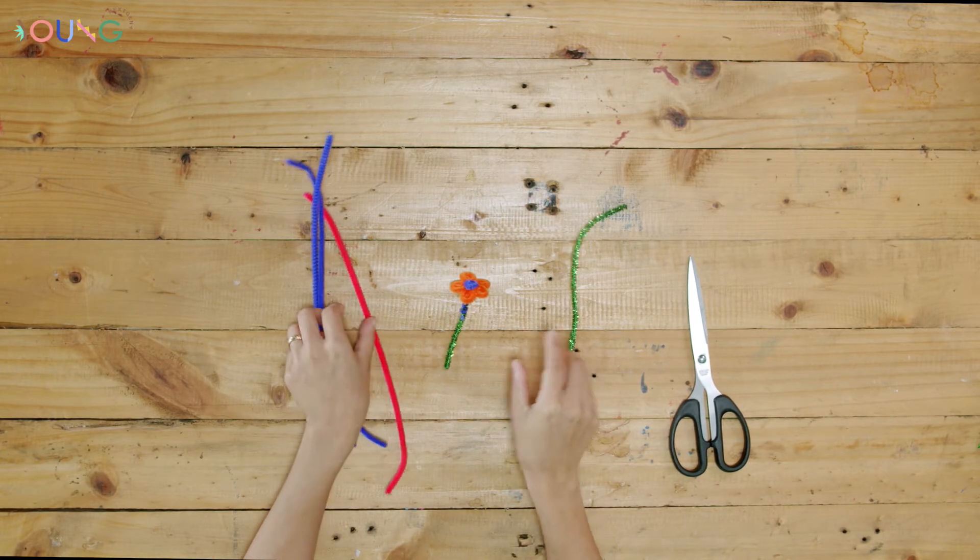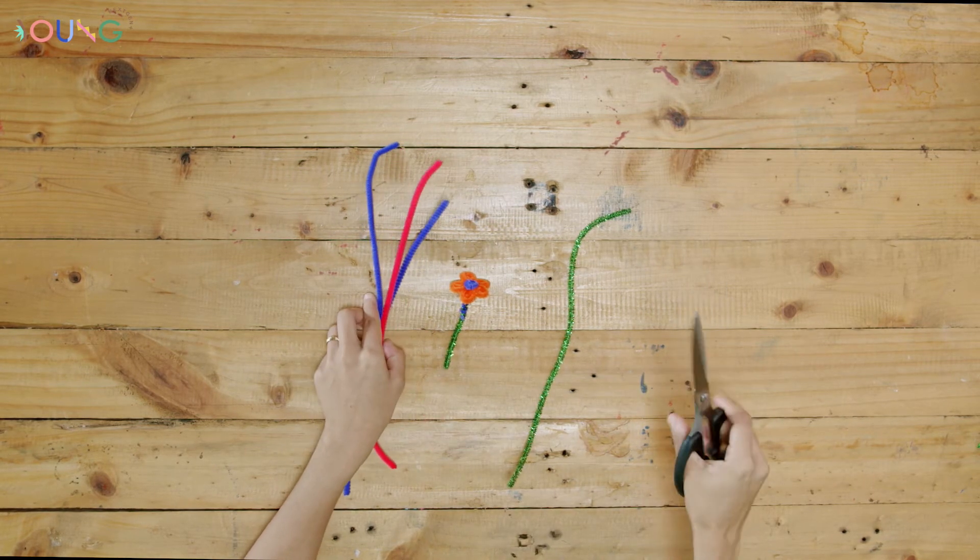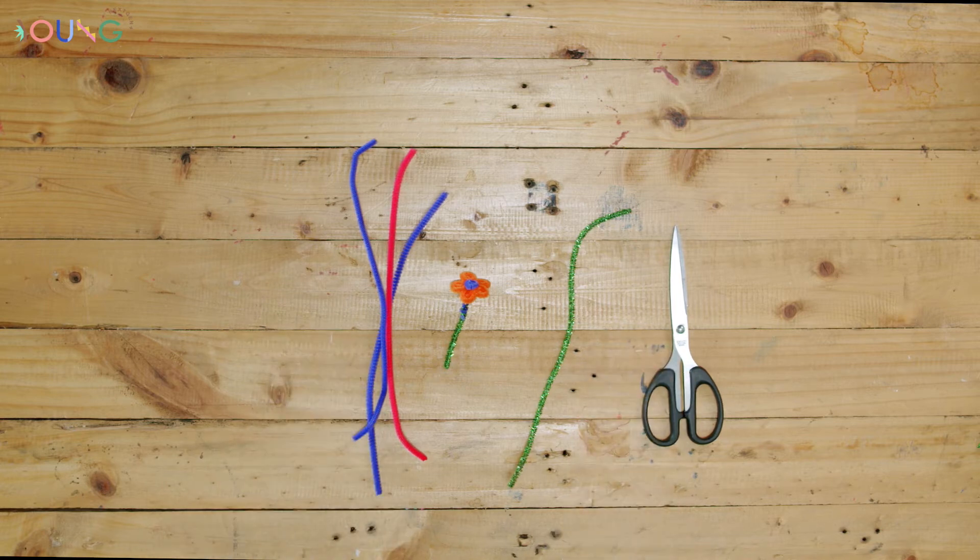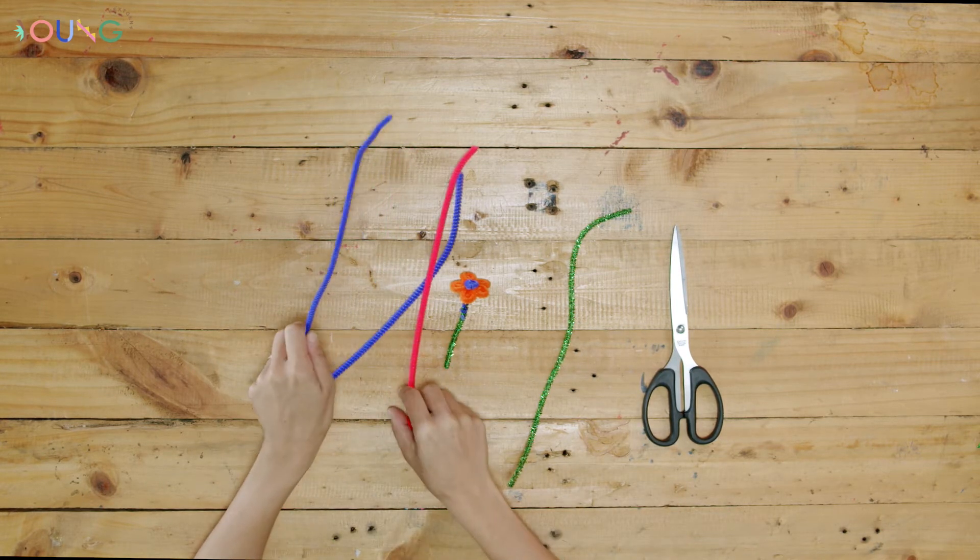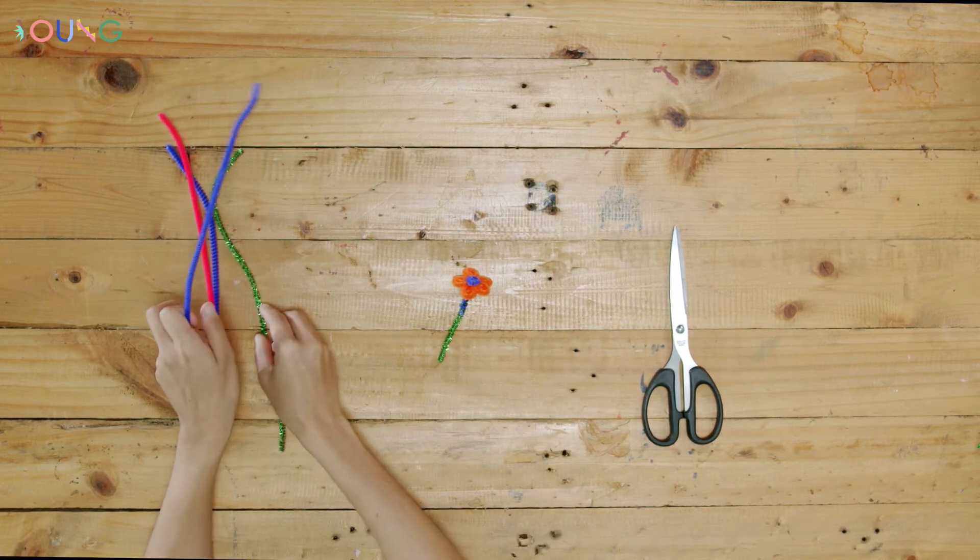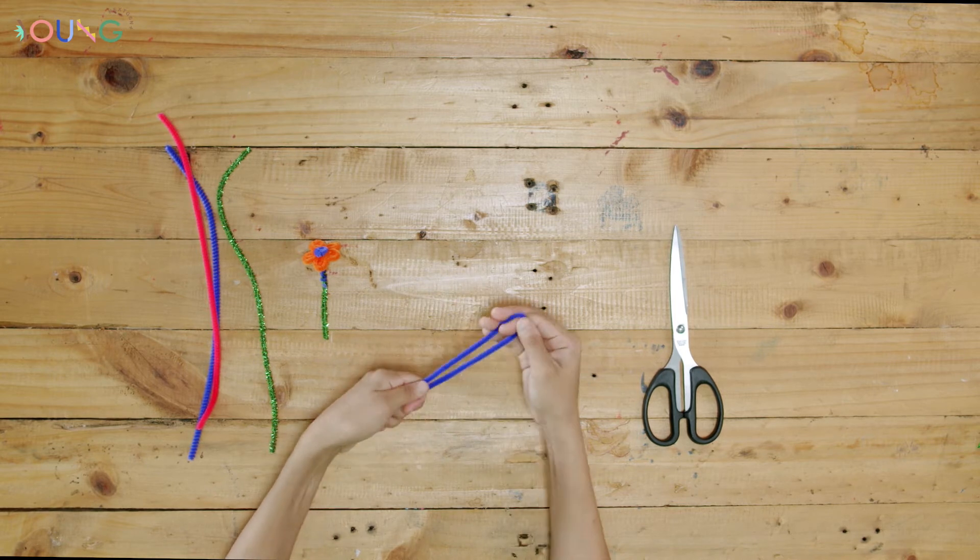What you need are four pipe cleaners, two with the same color and two with different colors, and scissors. I'm using two purple pipe cleaners as the flower petals, one pink as the middle part, and one green as the stock. But you can use any color you like!